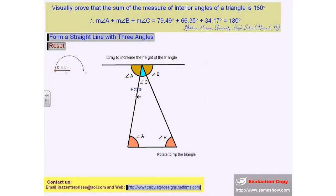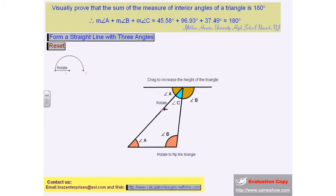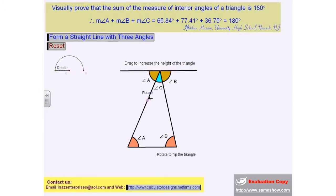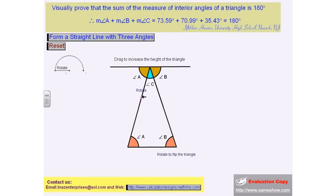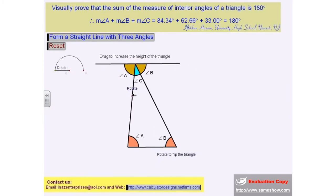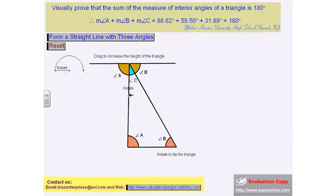Now, rotate this point to change the obtuse triangle to an acute triangle or to a right triangle. It looks to me it is approximately a right triangle.